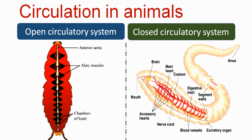In the closed circulatory system, blood flows only through blood vessels — particularly arteries, then capillaries, and veins. The closed circulatory system was firstly observed and demonstrated by scientist William Harvey.